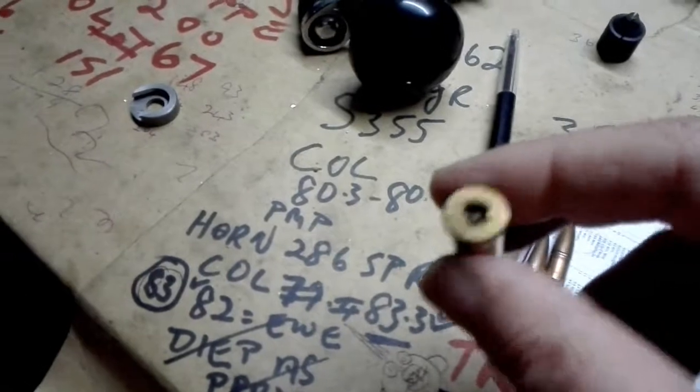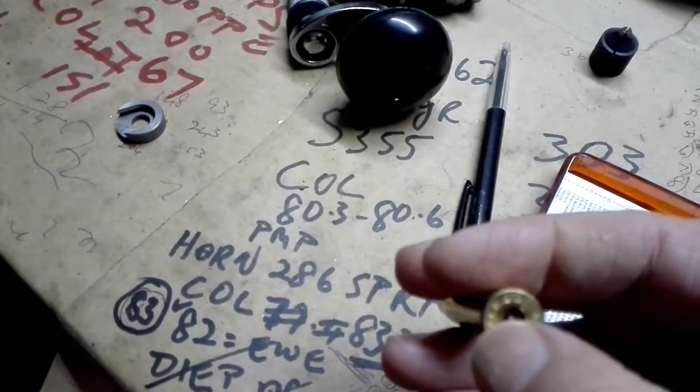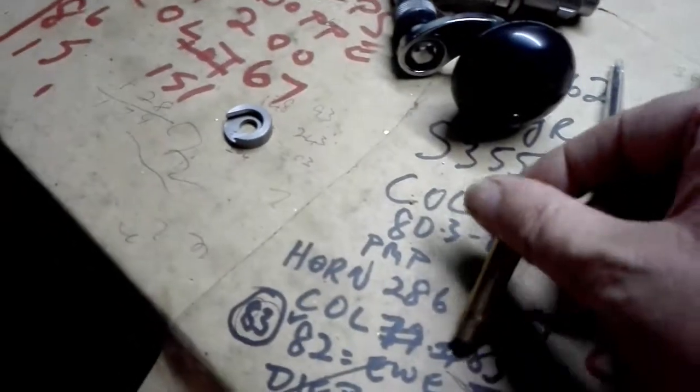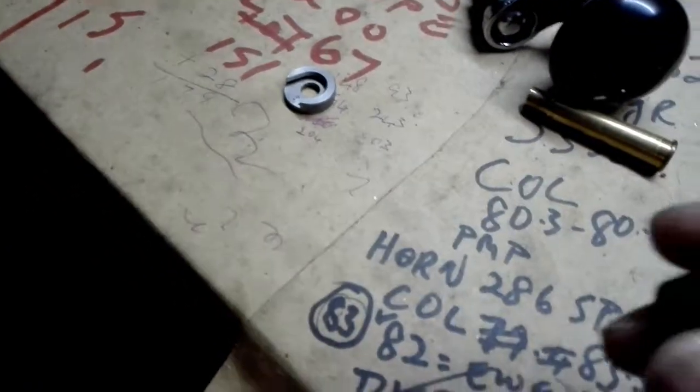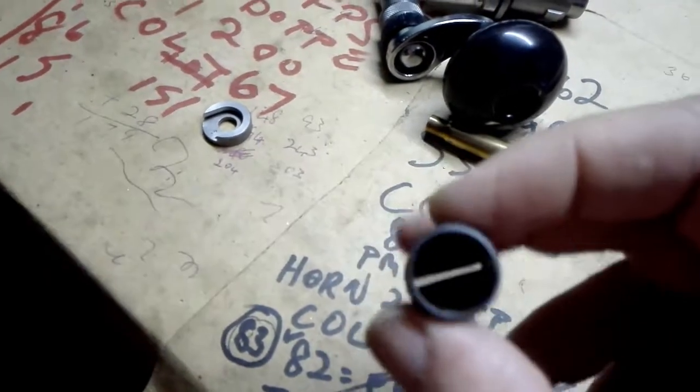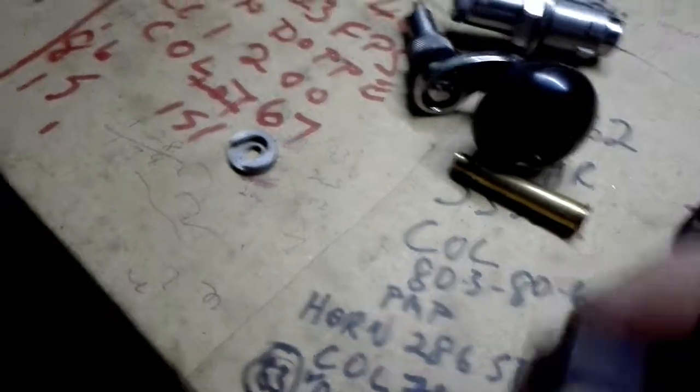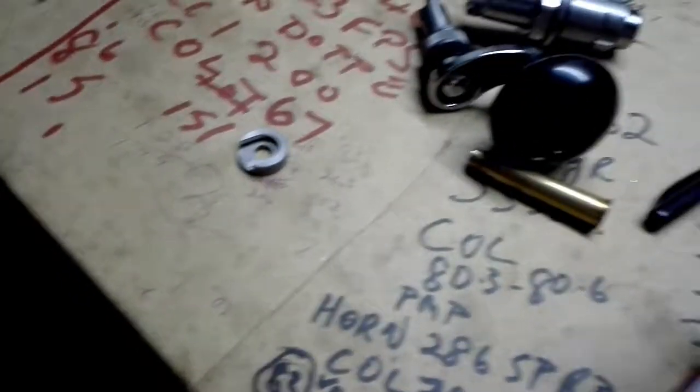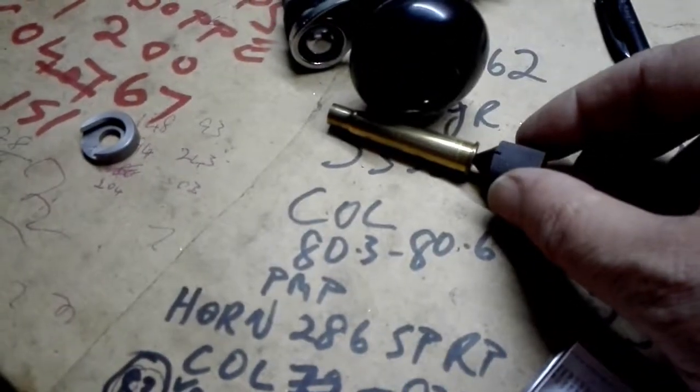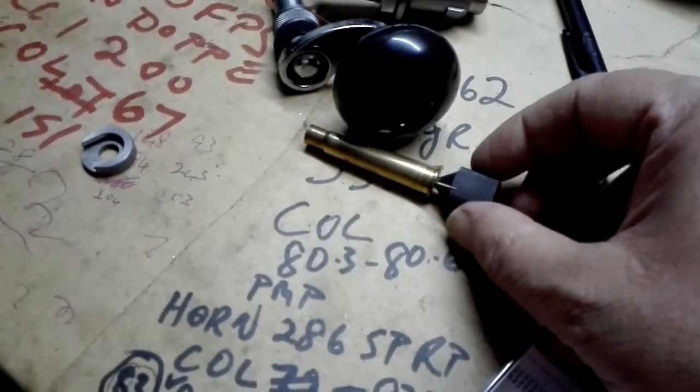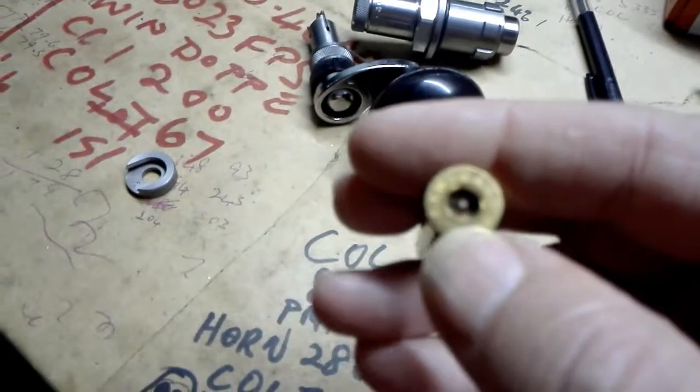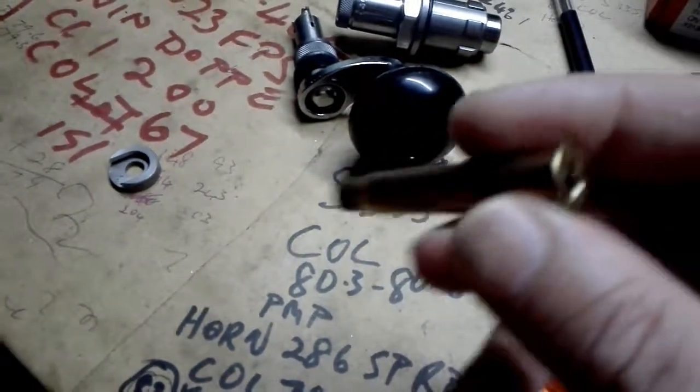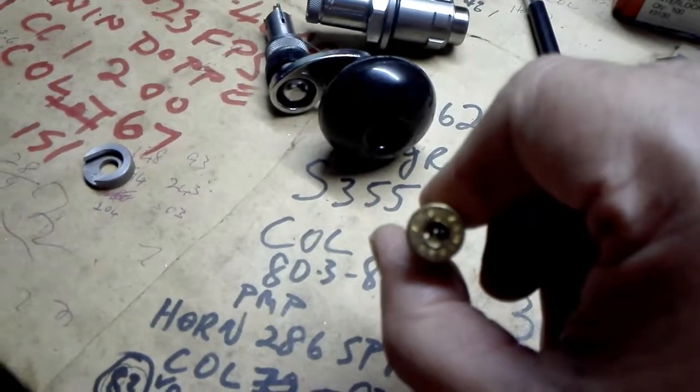Now the next step would be to deburr, to get rid of that military crimp lugs there. You're going to use this little Lee tool. It is the same tool you use to chamfer and deburr the case mouth. The angle of the shoulder here is steep enough not to damage the anvil of the primer pocket inside. You just deburr it there and you shave the crimp groove off so that the primer fits in snugly and you can deprime it easier the next time around.